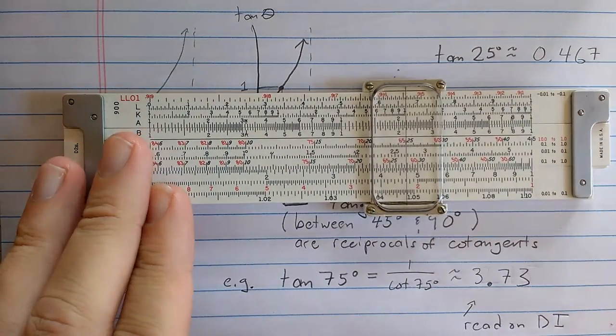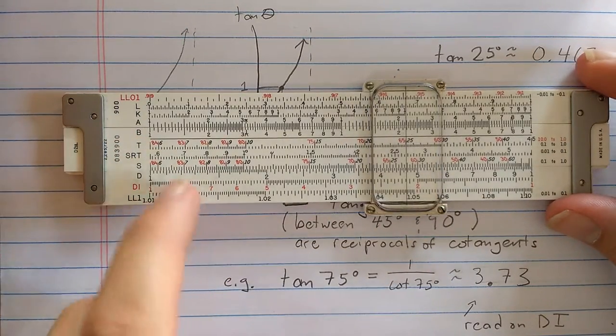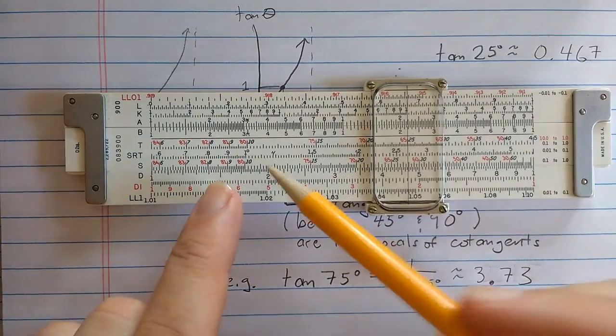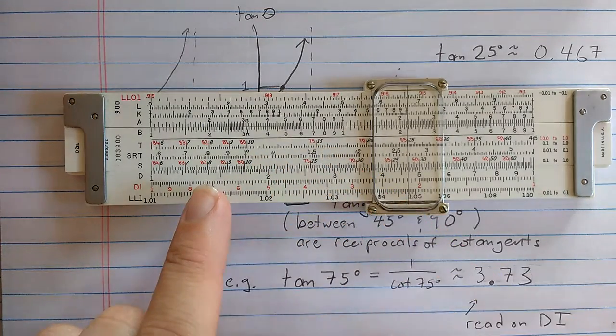So for example, if you want tangent of 75 degrees, first you set up the T for finding the cotangent.